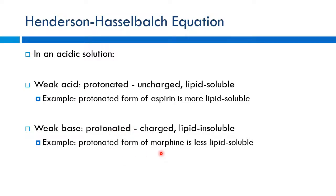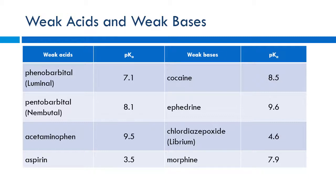For example, morphine — a weak base — taken orally would be less lipid-soluble in the stomach because it would be in a charged, protonated state and cannot cross membranes easily. Every drug has its own individual pKa. Acetaminophen is technically a weak acid with a high pKa, while aspirin has a lower pKa of about 3.5. At a stomach pH of 2, aspirin is well below its pKa and much more in the protonated, easily-absorbed state.